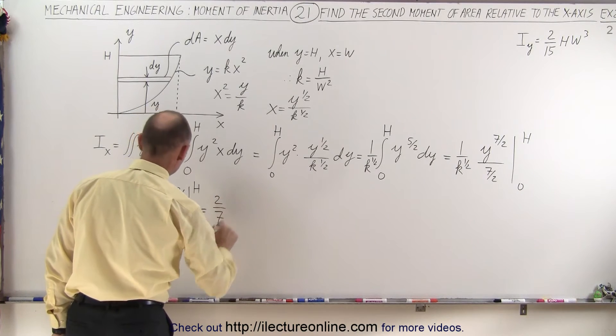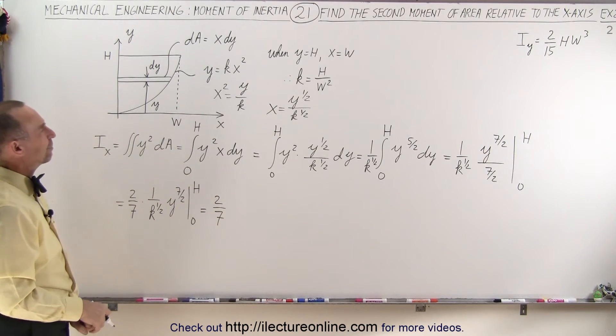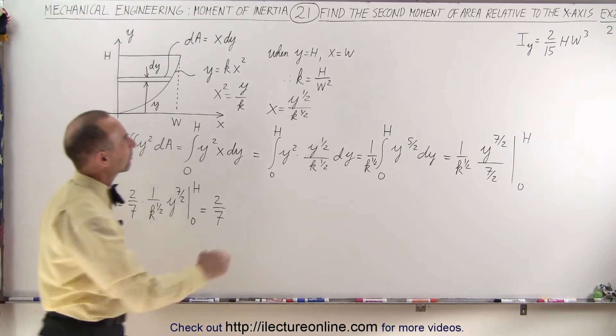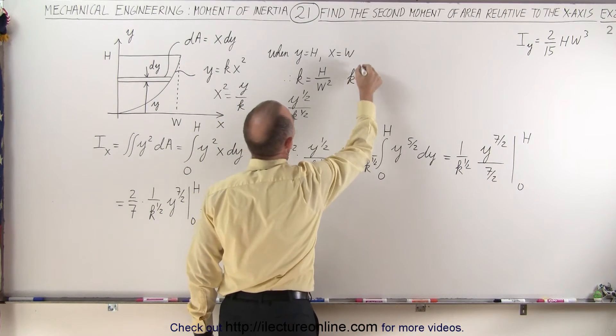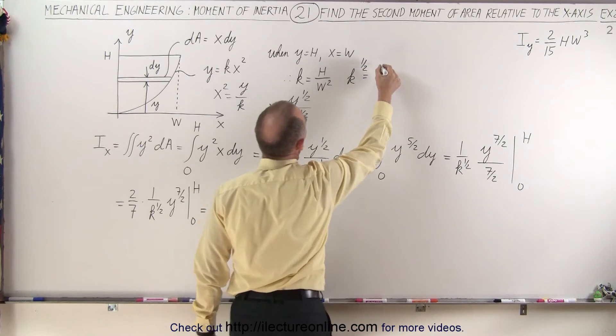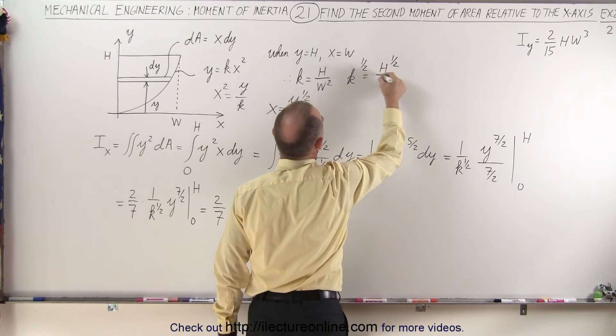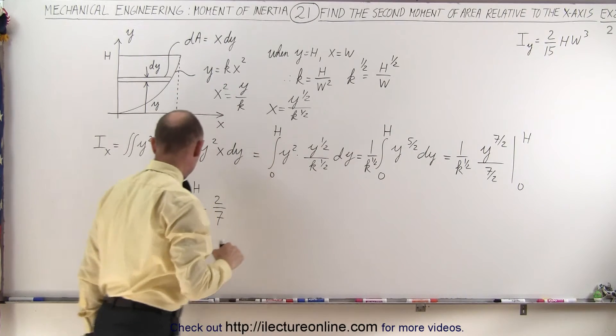What about k to the one-half power? Let's see here, we have k is equal to h divided by w squared, that means that k to the one-half power would be equal to h to the one-half power divided by w. So we can also make that replacement.